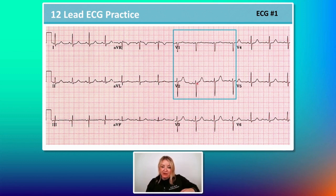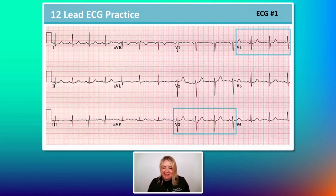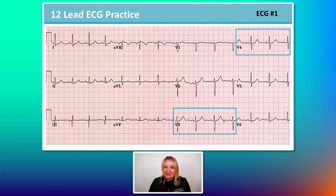Now we're going to go to V3 and V4, which look at the anterior wall. Are you excited? — meaning, do you see ST elevation? There's no elevation in V3 or V4. Do you see a transition from V3 to V4 with a more upright wave in V4? The answer is yes — so that looks like normal R-wave progression so far.